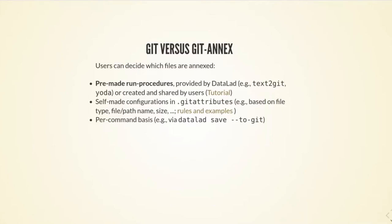The text-to-Git procedure that was used is the procedure that ensures any text file in your dataset, regardless of where it is placed, will be version controlled in Git, and any non-text file will be version controlled in the annex. You can also write your own procedures — there's a tutorial online. You can write rules, for example: include every file smaller than 20 megabytes in Git, or include every file in a specific directory in Git, or include everything in Git.